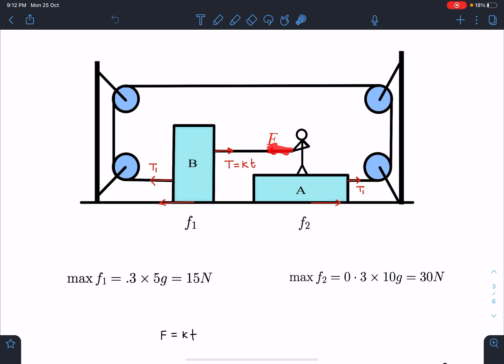So this force is kt. We can see till the moment this block moves, this tension will never come into picture. So first it has to be the friction which will generate.